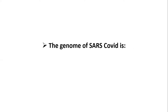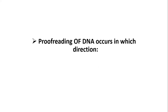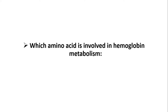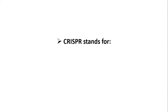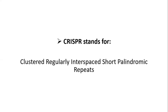The genome of COVID is positive sense messenger RNA. Proofreading of DNA occurs in which direction? 3' to 5'. Which amino acid is involved in hemoglobin metabolism? Glycine. The field of biotechnology in health is called Red Biotech. CRISPR stands for Clustered Regularly Interspaced Short Palindromic Repeats.